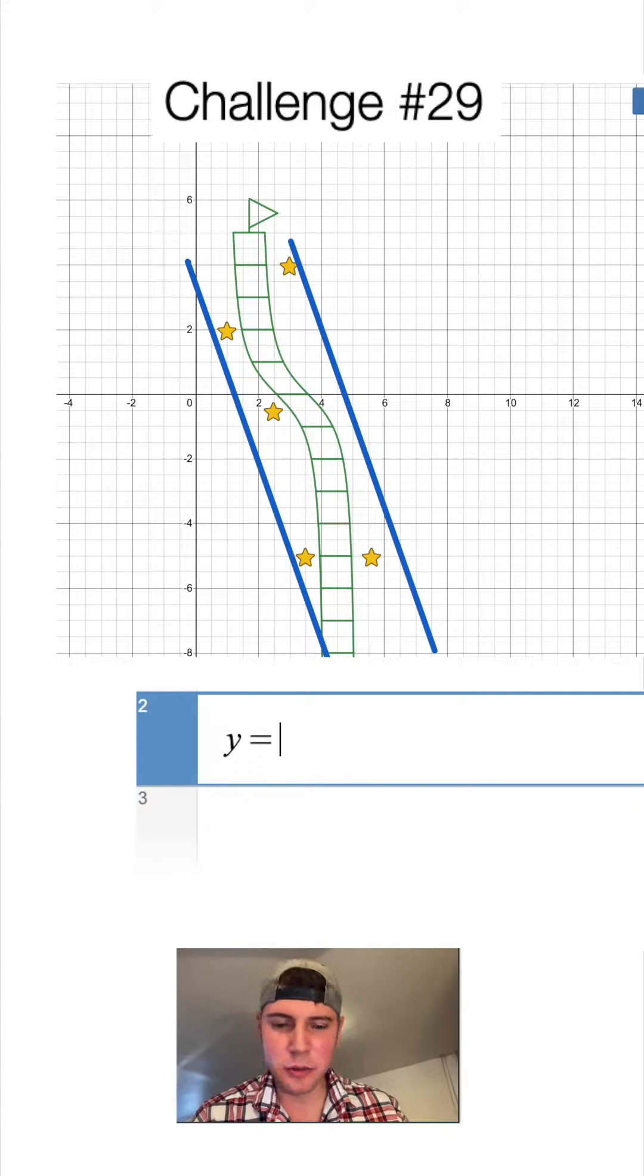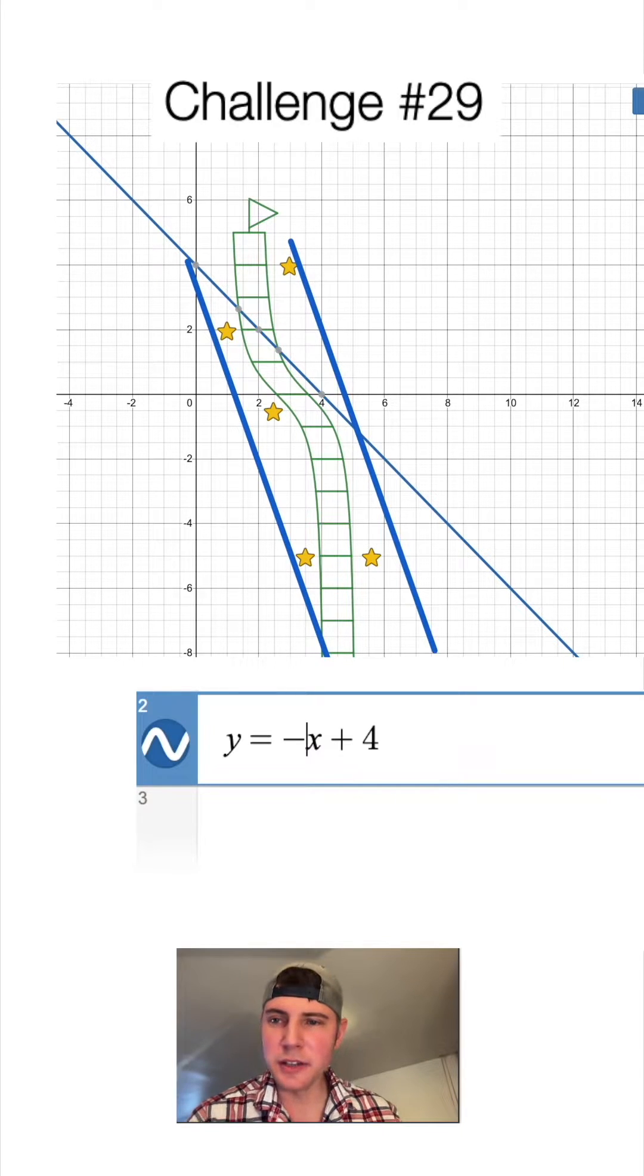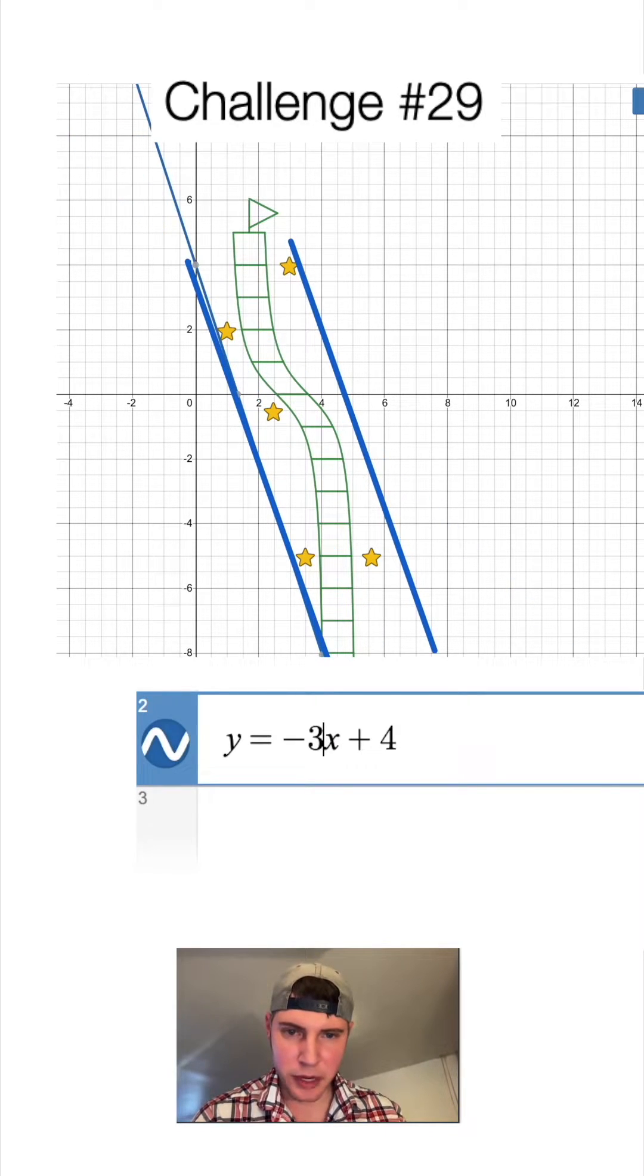Let's say y equals negative x plus, we need to go way steeper. Let's try 2x, 3x. That looks almost perfect. And the plus four looks pretty good too.